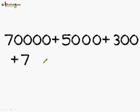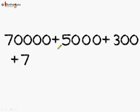Now let's convert this big number into standard form. We have places: ones, tens, hundreds, thousands, ten-thousands. So we have 70,000 plus 5,000 plus 300 plus 7.